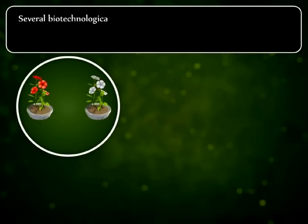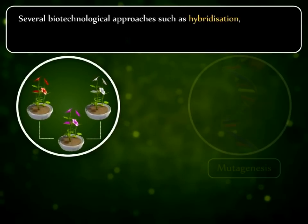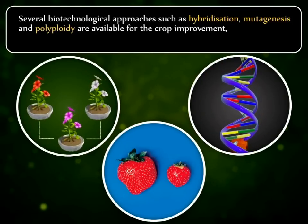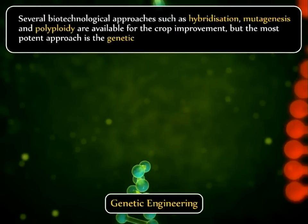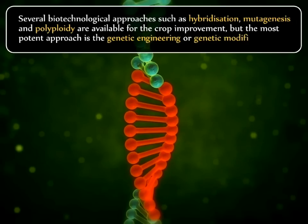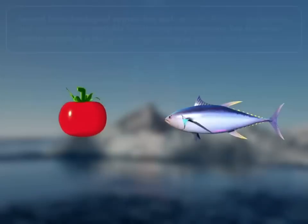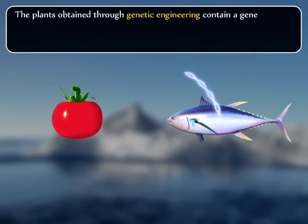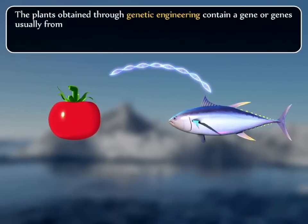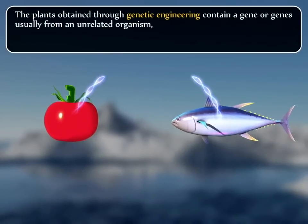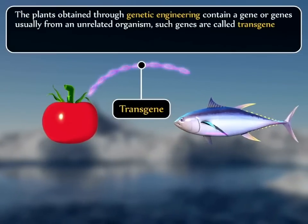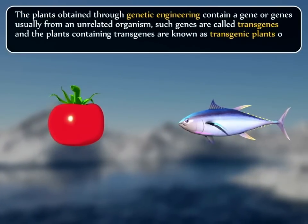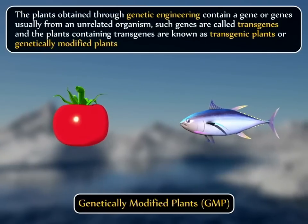Several biotechnological approaches such as hybridization, mutagenesis and polyploidy are available for crop improvement. But the most potent approach is genetic engineering or genetic modification. The plants obtained through genetic engineering contain a gene or genes usually from an unrelated organism. Such genes are called transgenes and the plants containing transgenes are known as transgenic plants, or genetically modified plants or GMP.